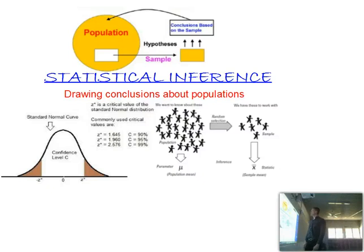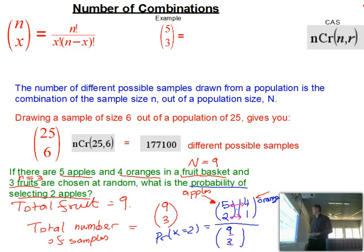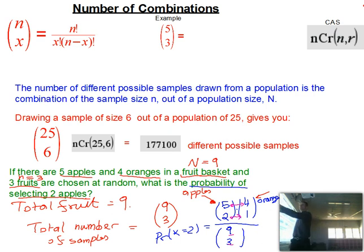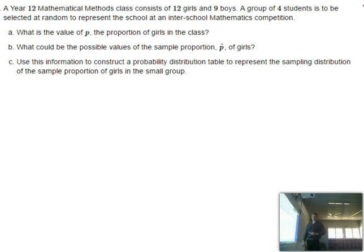Okay, welcome back. We are looking at statistical inference. Last part, we had looked at some number theory involving combinations and how we can use combinations to work out some probabilities. So let's apply some of that idea to this particular example.